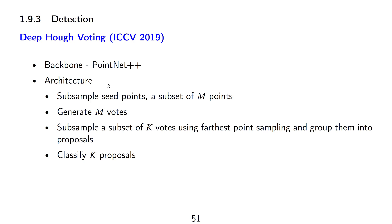For detection, the goal is to find boxes in 3D space where each box describes one object. This is analogous to 2D image detection, but now we want to detect objects with 3D bounding boxes. The Deep Hough Voting paper uses PointNet++ as its backbone and has levels of subsampling in its architecture.